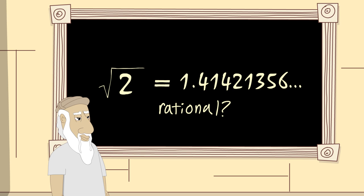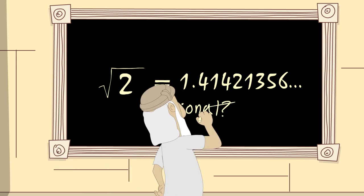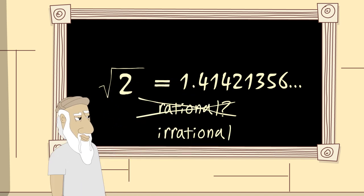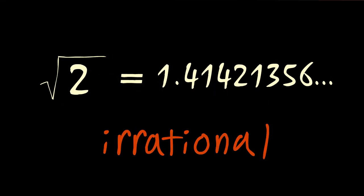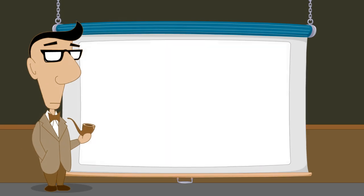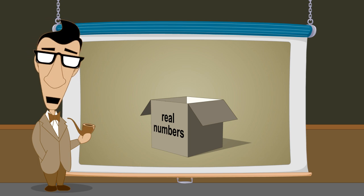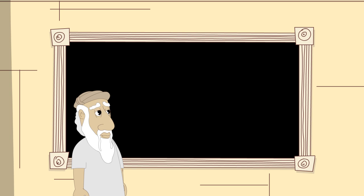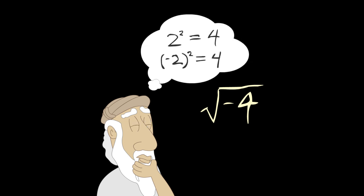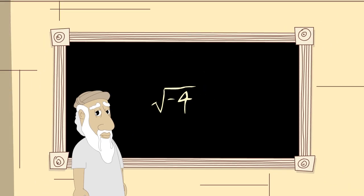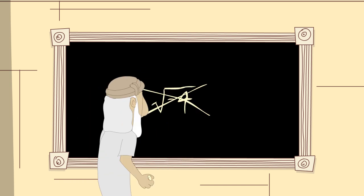These kinds of numbers cannot be represented by any rational number. In fact, square roots forced the Pythagoreans in ancient Greece to invent a new kind of number, which they were apparently not very happy about. We now call these numbers, which are not equal to any rational number, irrational numbers. The rational and irrational numbers taken together are called the real numbers. But more about that later. However, even with real numbers, it is impossible to take the square root of a negative number. This is because squaring positive or negative numbers always results in a positive number. There is no real number which, when squared, is negative. Therefore, negative numbers have no real square roots.